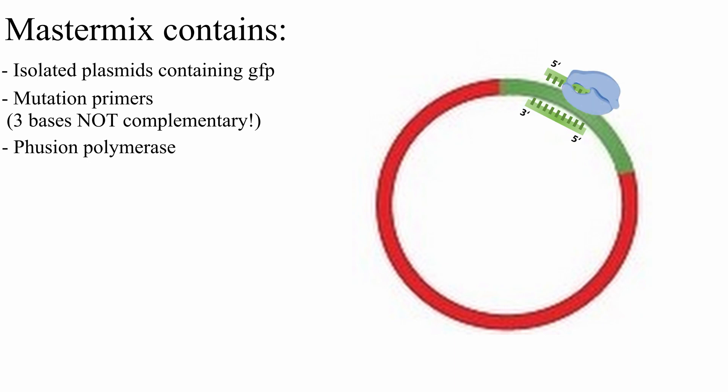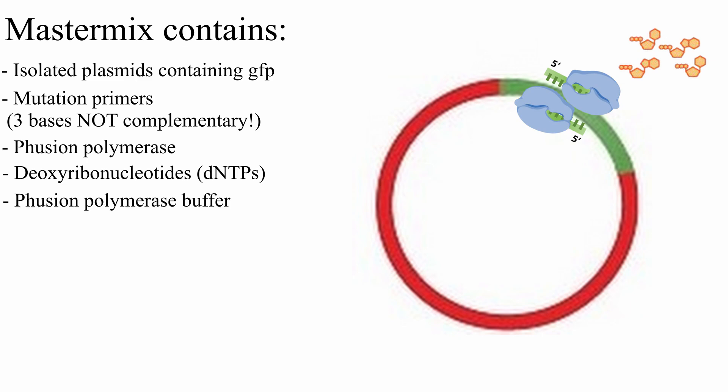A polymerase which will bind to the primers and start replicating the plasmids. DNTPs which the polymerase uses to build the new strands of DNA. A buffer and water.